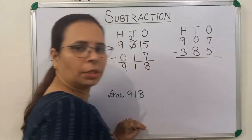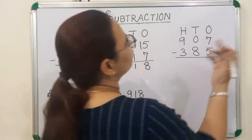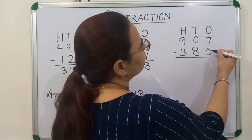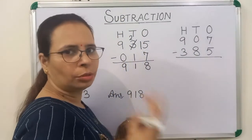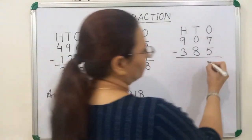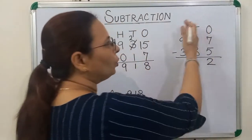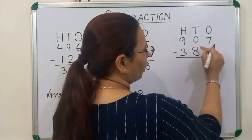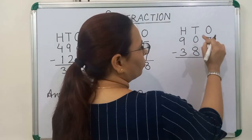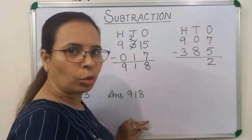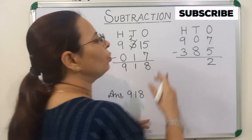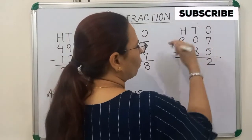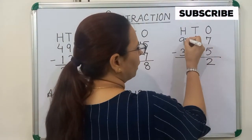Here we will start subtraction from ones place. As you know, 7 minus 5 is equal to 2. Now we will move on to tens place. We will subtract 8 from 0. It is not possible. So what we will do? We will borrow 1 from next number. Next number is 9.